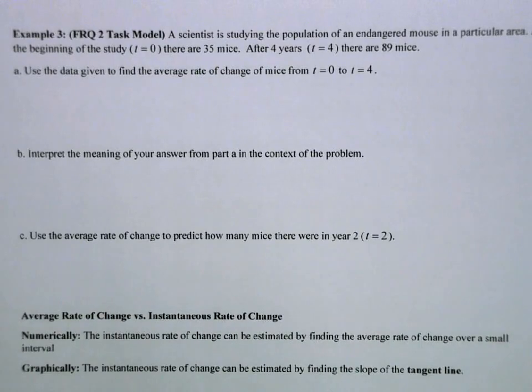On the AP pre-calculus exam, there are four free response questions, and they are very standardized. We know what to expect on each of those four. On the free response task model, you will be asked to calculate the rate of change of some context. Then you'll be asked to do something with that. So we're going to practice that here.